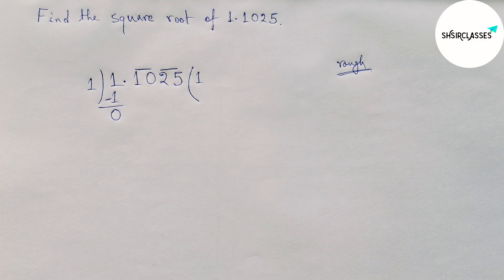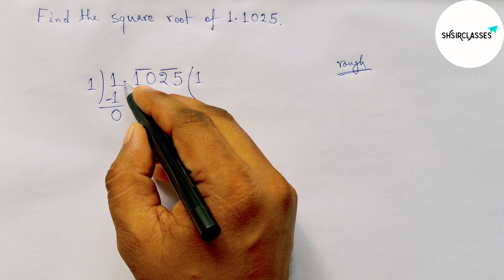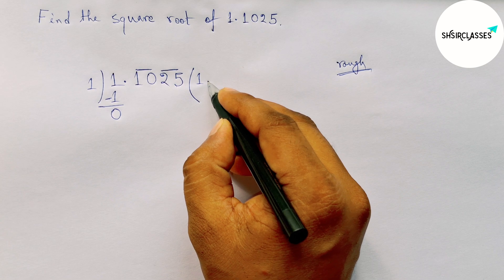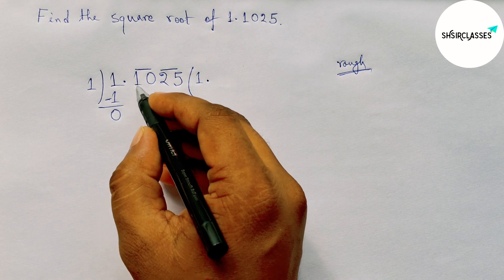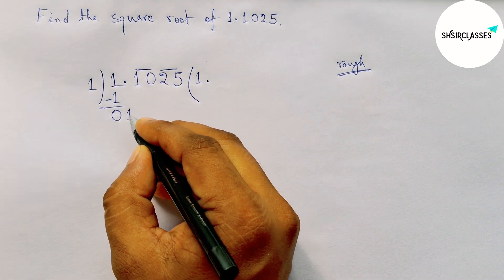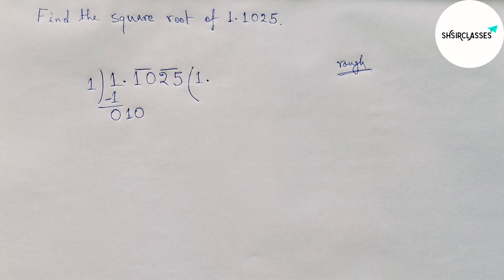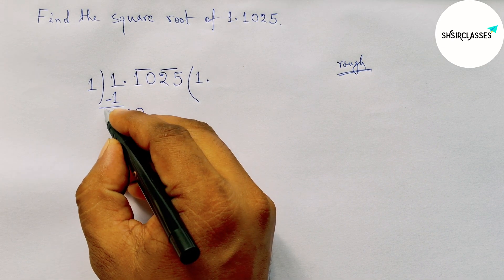Next, this decimal point will be shifted here, then write down here the first pair of number 10 and drawing a division line here. Okay, next taking a double of one.